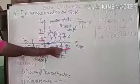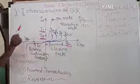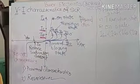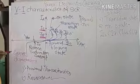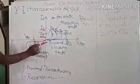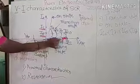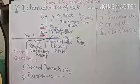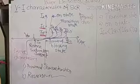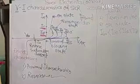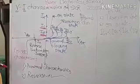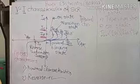Breakover voltage (VBO) is the voltage below which SCR remains in the OFF condition. When the actual voltage is greater than the breakover voltage, SCR goes into the ON condition. In other words, breakover voltage is also called the threshold voltage — it is the threshold value required for the turn-on of the SCR.